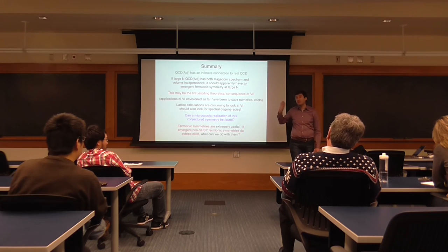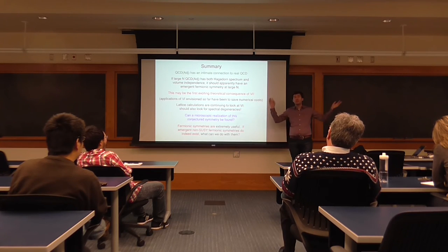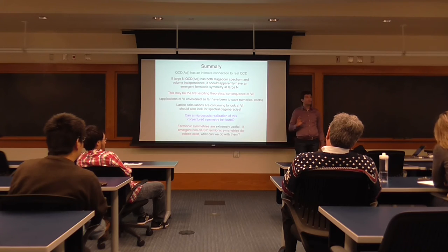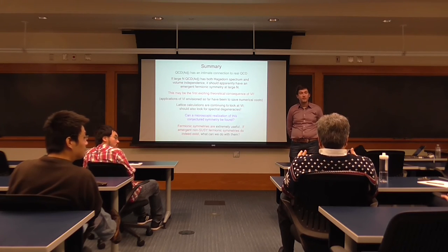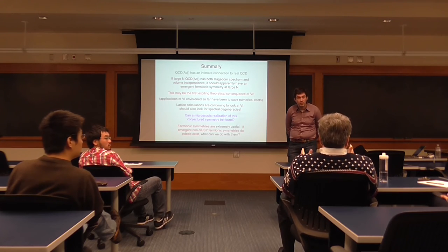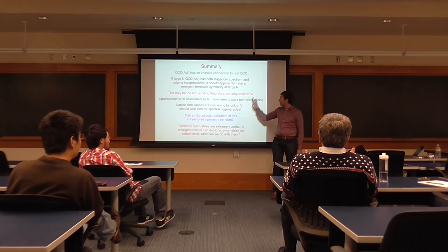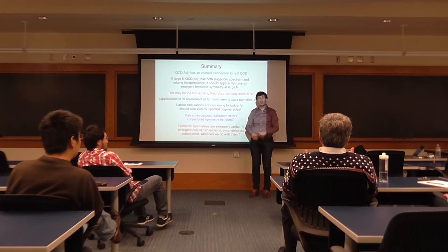Can you write down the algebra abstractly, even if you don't know how to realize it in the pure gauge theory? Not yet. Because to even write down the algebra, I need to first find the transformations of the fields in QCD adjoint that leave the Lagrangian invariant. Then I need to start considering commutators and anticommutators of those field transformations to figure out what the algebra would have to be.